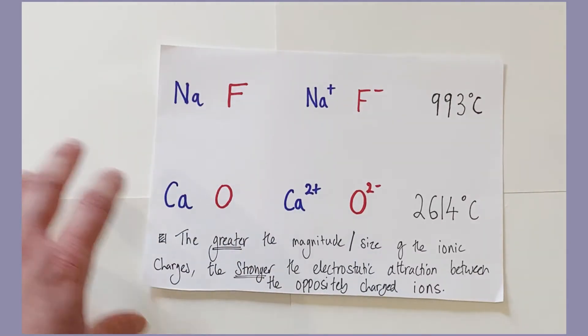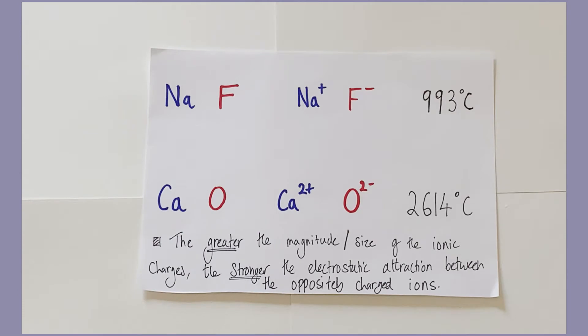I want to be more specific here and look at two comparative examples of giant ionic structures. This is sodium fluoride versus calcium oxide. Now you'll notice that calcium oxide has a higher melting point than sodium fluoride. Now why would that be? They're both giant ionic structures, so what's the difference?